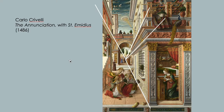Likewise, this painting by Carlo Crivelli — all the lines that are receding meet at a very particular point called the vanishing point. Things that are close to you are larger, and things further away are smaller, and if they keep getting smaller and smaller, they seem to stop at that particular point.